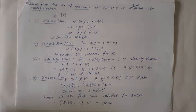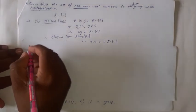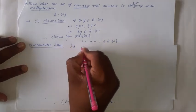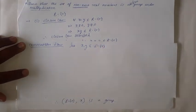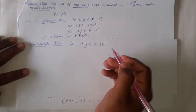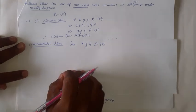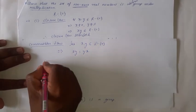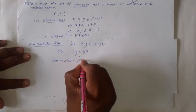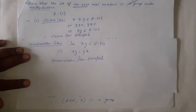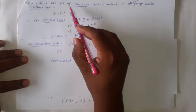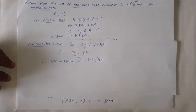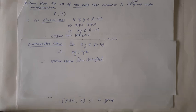Now we need to prove that R\{0} under multiplication is an Abelian group. For the Commutative law: let x, y belong to R\{0}. Multiplication is commutative — you can multiply the first number by the second or the second by the first and the product does not change — so x·y = y·x. Therefore, the Commutative law is satisfied, and the set of non-zero real numbers is an Abelian group under multiplication because it satisfies all five laws necessary for an Abelian group.